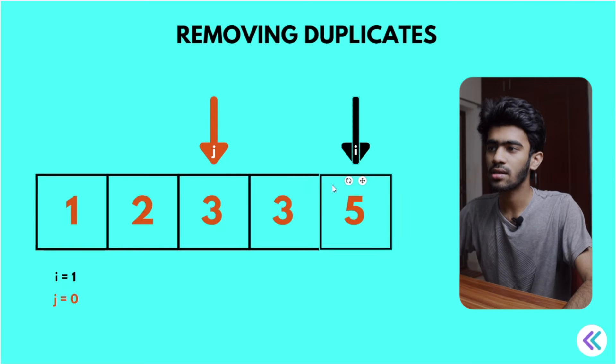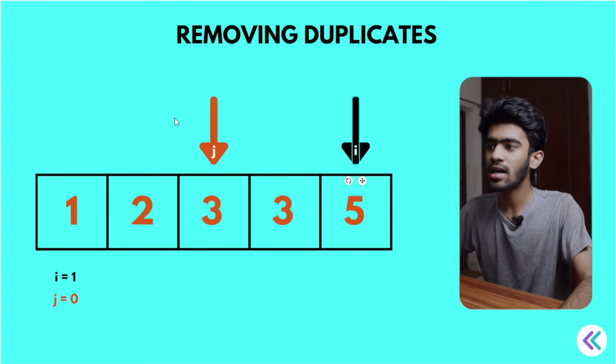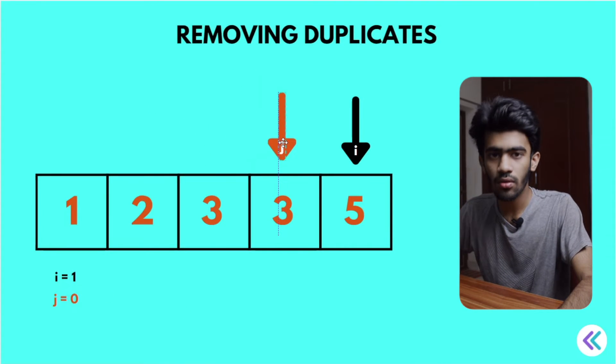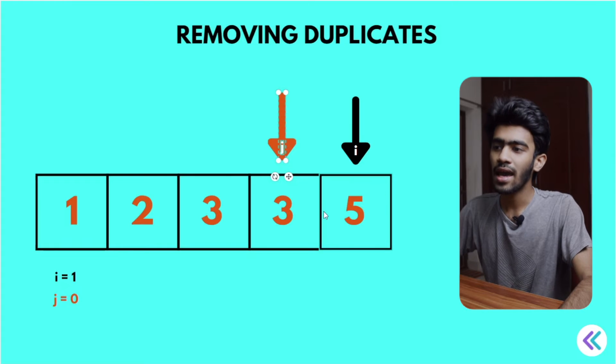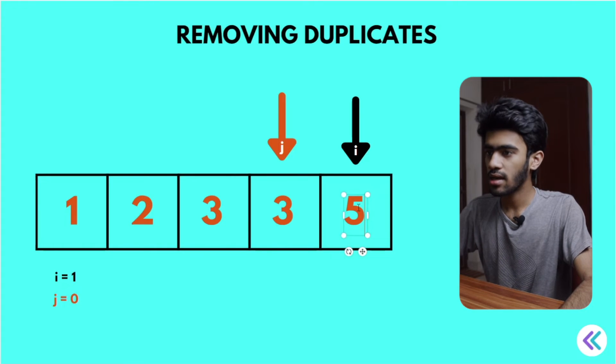So i value increment. a of j and a of i value substitute. So i value increment. 3 and 5 is not equal, so j value increment and a of i value and a of j.